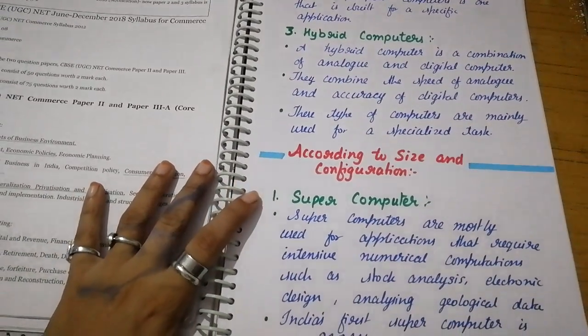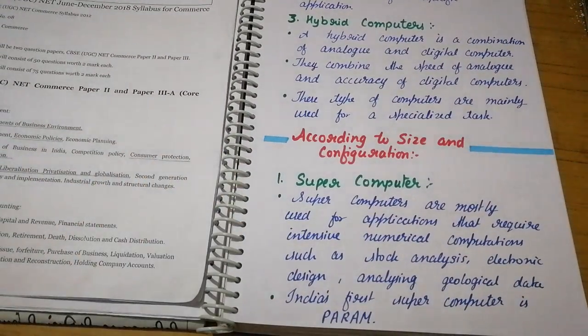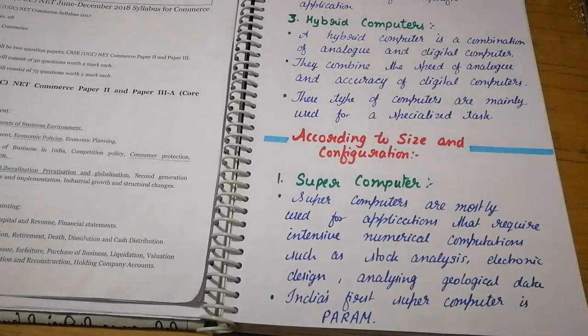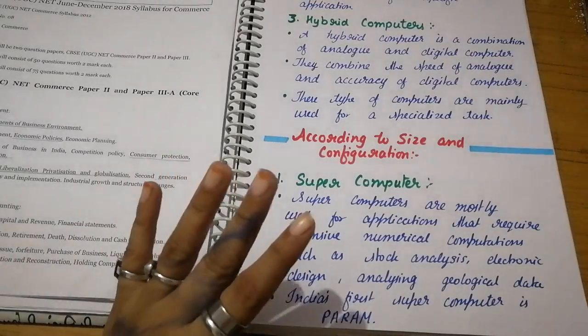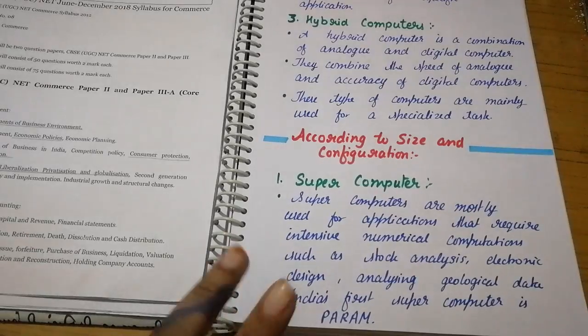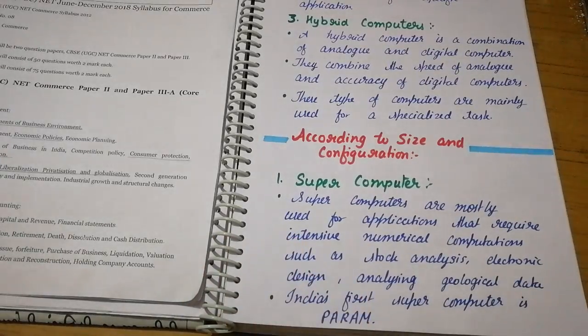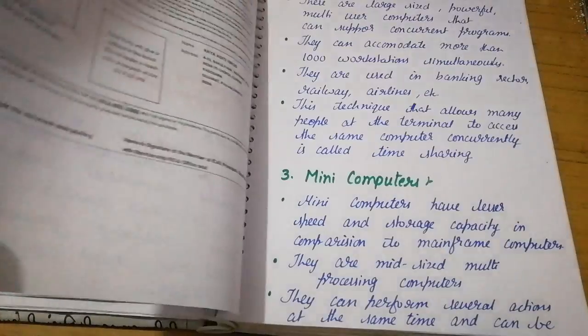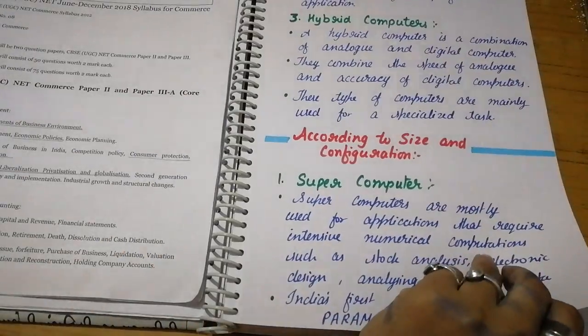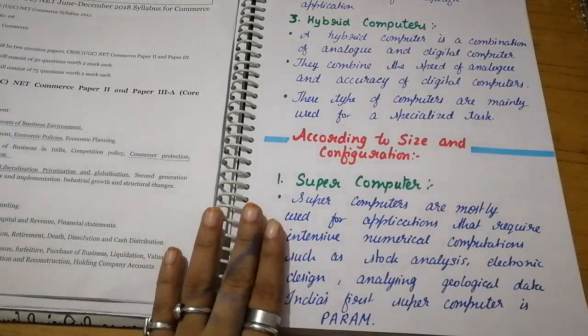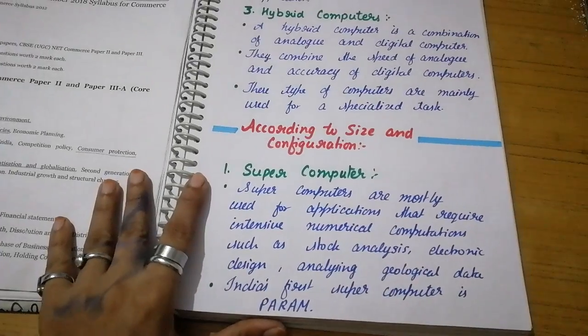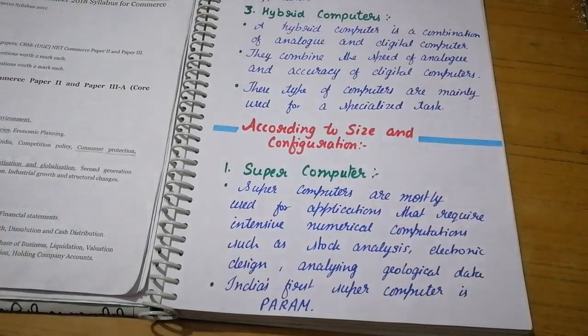Now let's do classification according to size and configuration. We have four types of computers: supercomputer, mainframe computer, mini computer, and microcomputer. These are the four types we are going to learn and understand.